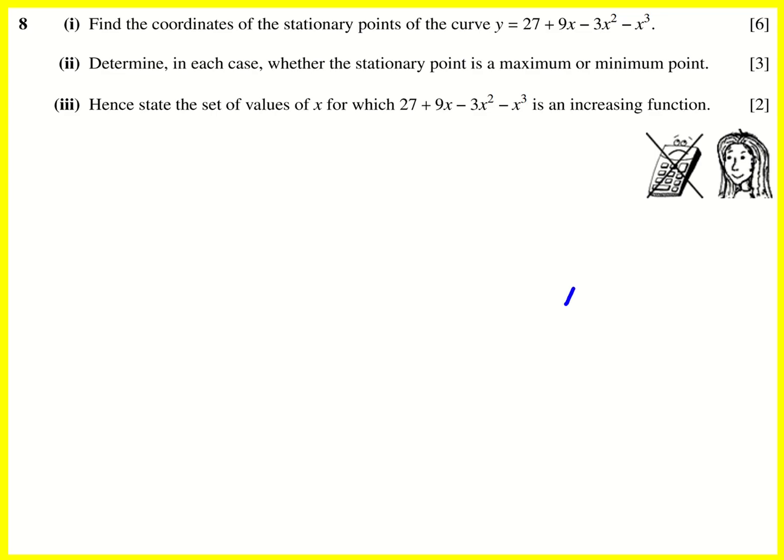The stationary points on a curve are where the gradient momentarily becomes zero. So here it's positive and then it becomes negative. It's zero here and similarly here. And that means that the gradient function is equal to zero here. So we need to differentiate.